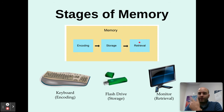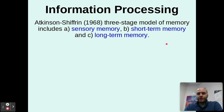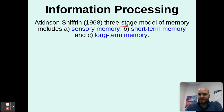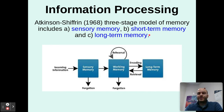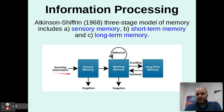A theory of information processing and memory creation and storage comes from Atkinson and Shiffrin. They created a three-stage model of memory, saying our memory includes a sensory memory, a short-term memory, and a long-term memory. You have these three places that memories can stop along the way to making it to long-term, and there are processes that need to occur to get them from sensory memory to long-term memory. We'll talk about each one individually and how they work together.